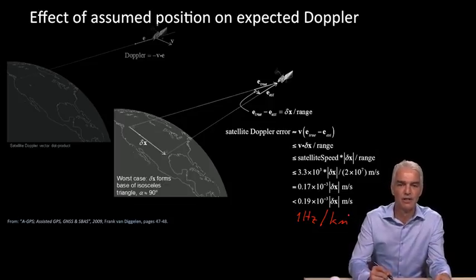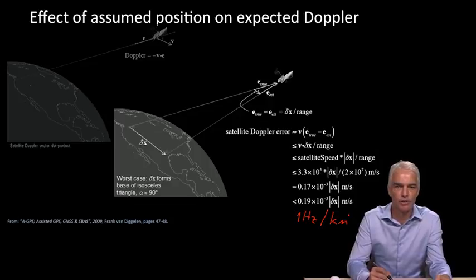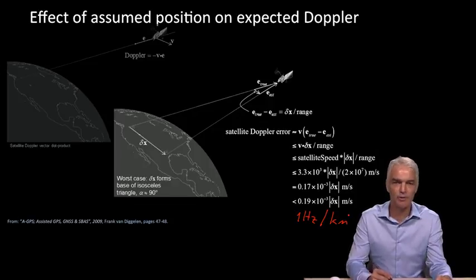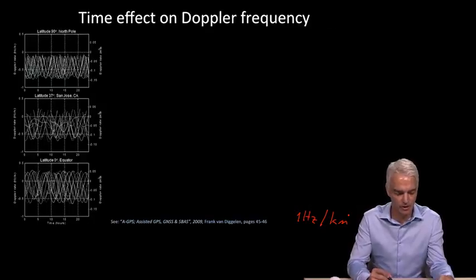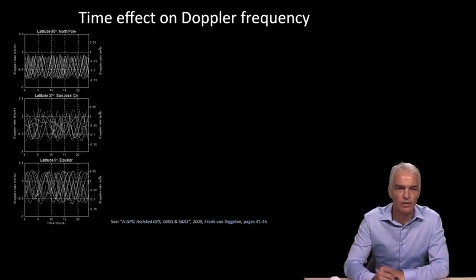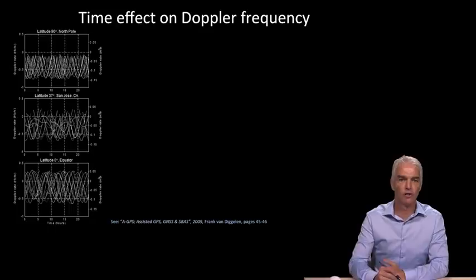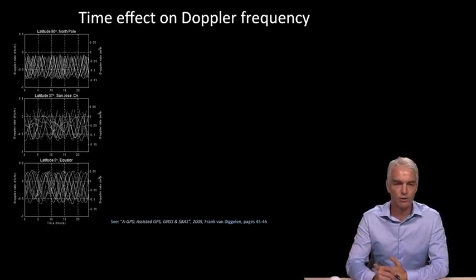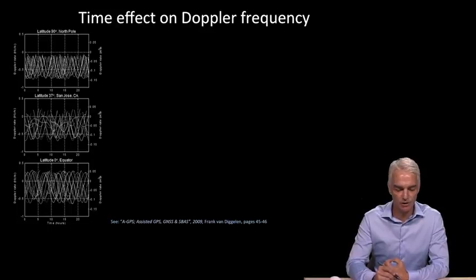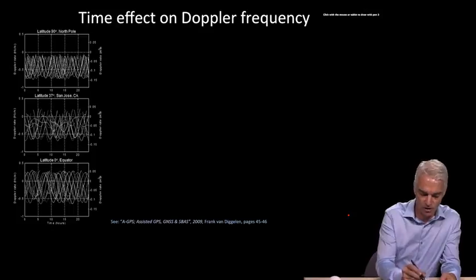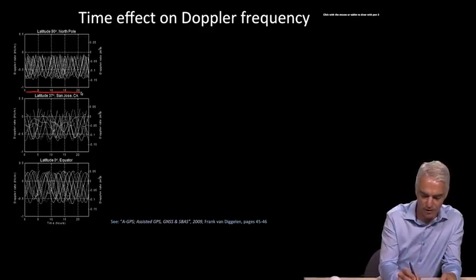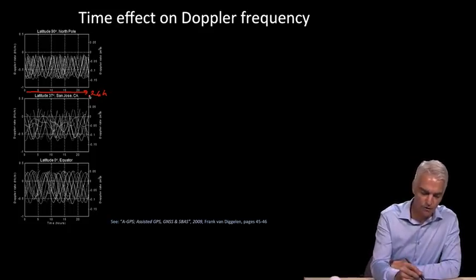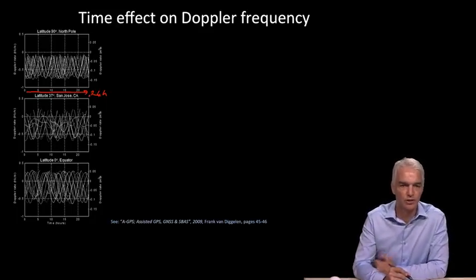What about the assumed time? How do you analyze that? The way we choose to analyze that is by doing simulations of the observed Doppler from certain points on the Earth and watching how fast the Doppler changes with time. Then we can see the time effect on the Doppler frequency. We choose to start at the North Pole with a simulation where somebody's standing on the North Pole watching a satellite. Here we have time in hours going up to 24. We're observing the Doppler rate, how fast does the Doppler change in hertz per second.